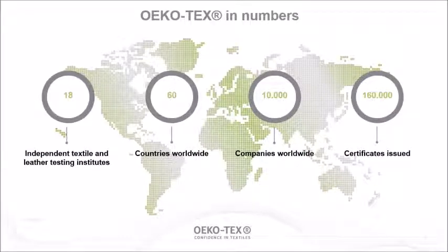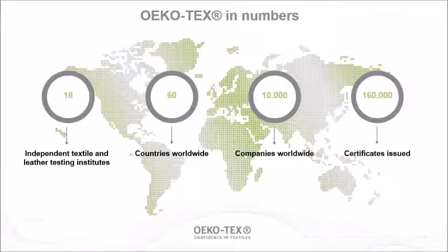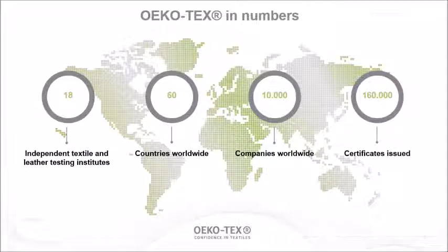Ökotex is worldwide, with 18 institutes represented in more than 60 countries. Until now, we have more than 10,000 companies working with us for the Standard 100, and we have issued about 160,000 certificates in total. We have 25 years of experience in testing and certification of textile and textile-related goods. To enlarge our knowledge, Ökotex has extended this group with two more institutes specialized in leather.